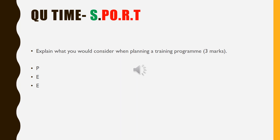Now it's task time. The question is: 'Explain what you would consider when planning a training program.' This is only for three marks. You've already covered S, so now cover P and O (Progressive Overload), R (Reversibility), and T (Tedium). Give me three PEE chains — point, example, explanation — and remember to select the right bits and give examples. Complete this on a piece of paper.